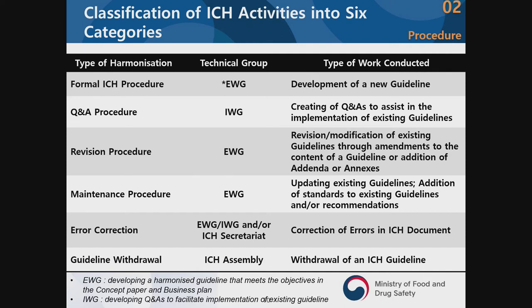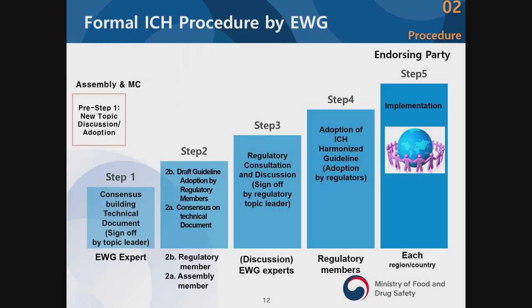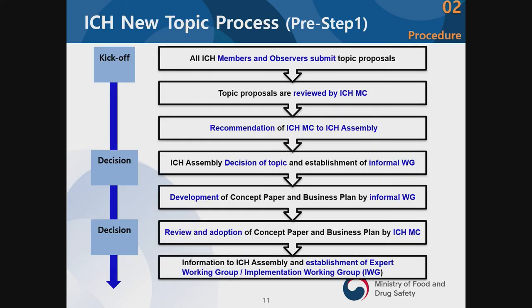Let me go over the ICH process for guideline development. There are six different categories for ICH guidelines, and expert working groups are the ones who lead the process. There is also a type of harmonization called Q&A — after guidelines are issued, if there are many questions, there is a Q&A procedure, and IWG leads that process. Before step 1, there is a pre-step 1 phase where new topics are identified.